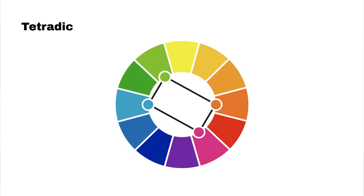Blue can be perceived as a calming color — it can mean trust and stability. Many corporations and brands that want to be perceived as serious use blue. Many brands related to technology or looking to convey trust also use this color. Next, we have green, which represents nature, growth, and serenity. Many brands connected with the environment or healthcare also use this color.